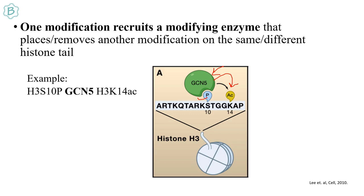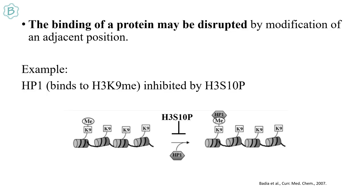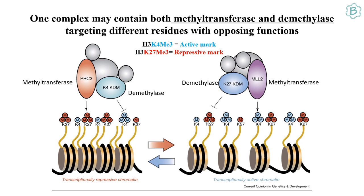The binding of a protein may be disrupted by modification of an adjacent position — for example, when H3 K9 has a methyl group, HP1 binds, but when H3 S10 is phosphorylated, HP1 binding is prevented. One complex may contain both methyltransferase and demethylase targeting different residues with opposing functions. In transcriptionally repressive chromatin, PRC2 methylates K27 — a repressive mark — while K4 lysine demethylase removes the active methyl mark from K4.